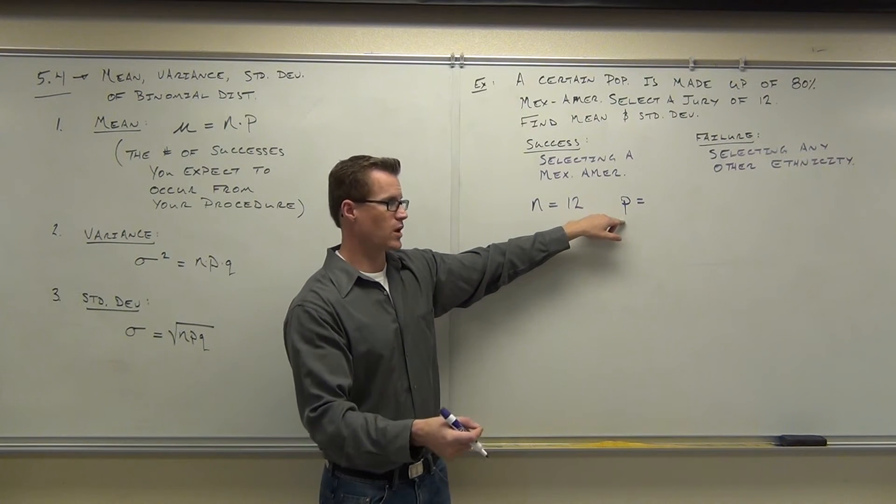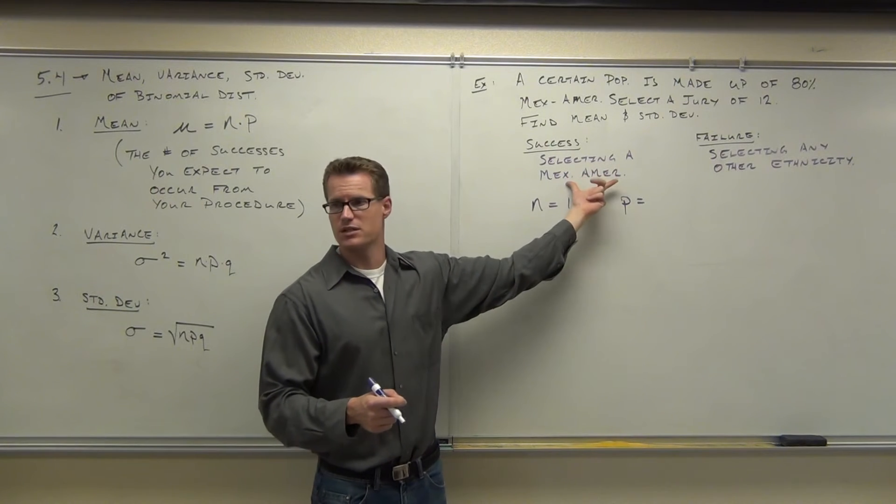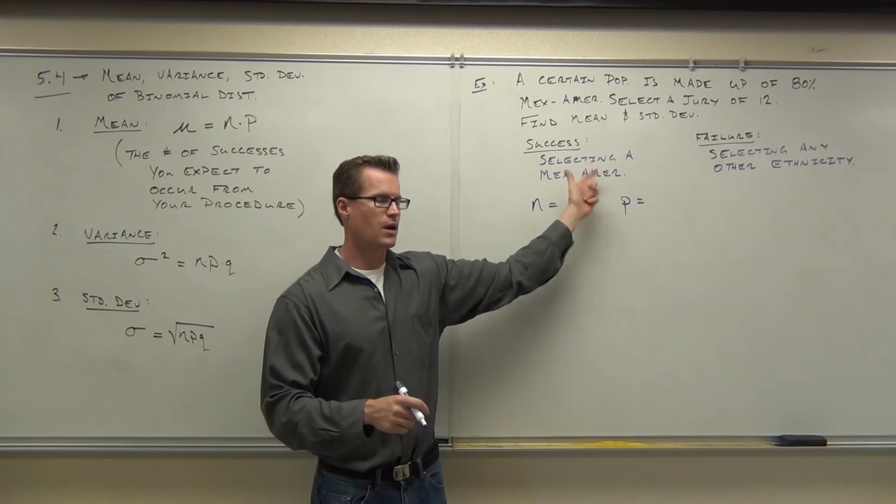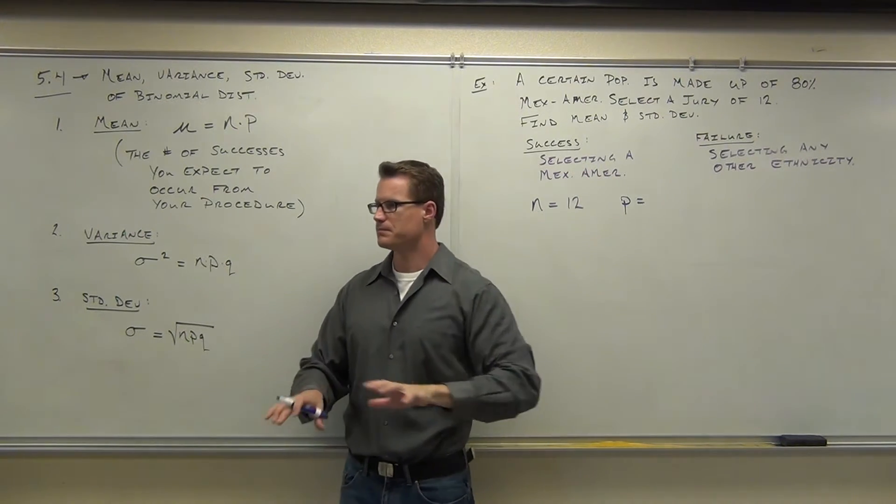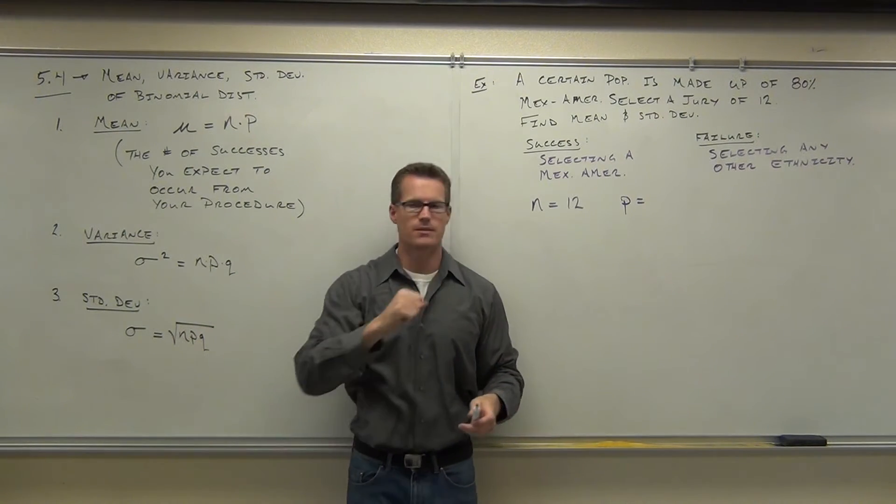Which is, we need to know what a successful trial means. In our case, a successful trial is selecting a Mexican-American. So, now you just have to look back. What's the probability that you're going to go out in your population, and you're going to randomly select somebody, and they're going to be a Mexican-American?